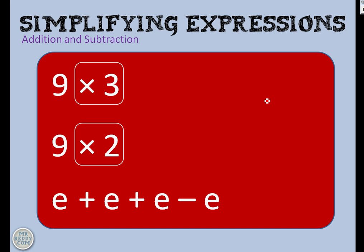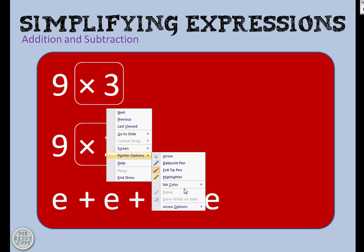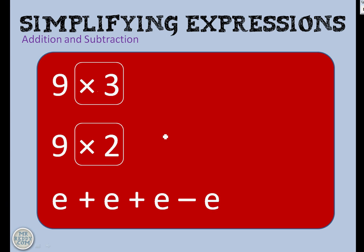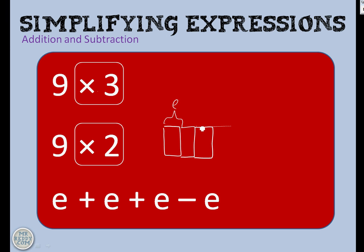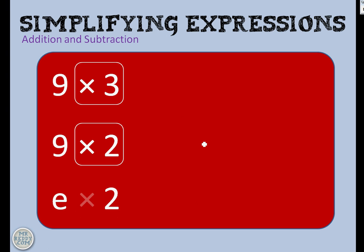And here we've got e add e add e and then take away e. If I do a bar model, it would look something like this. So this is e, and then I add on another e, and then I add on another e — but then I take away e, and all of that last one just goes. They just vanish, and what are you left with? e times 2 — not e2, but 2e.